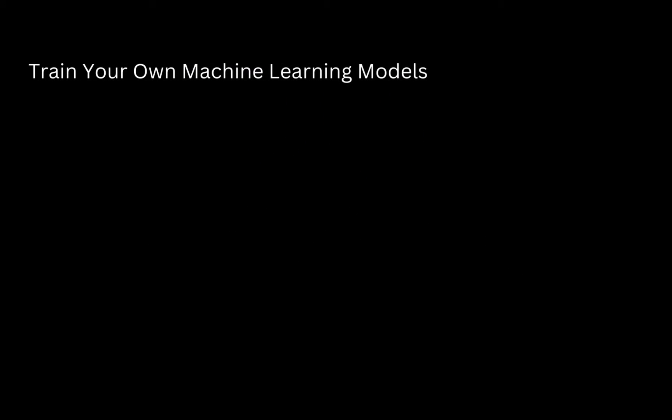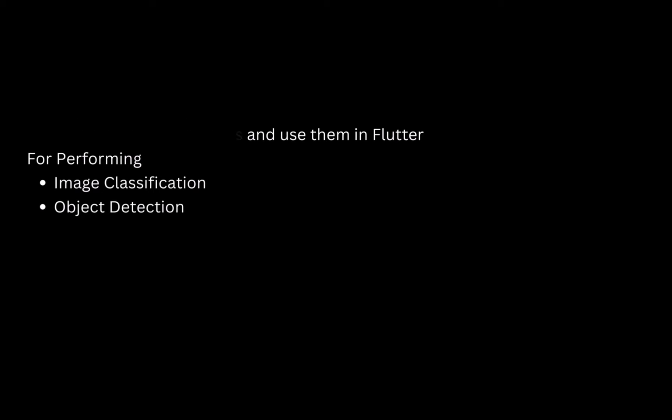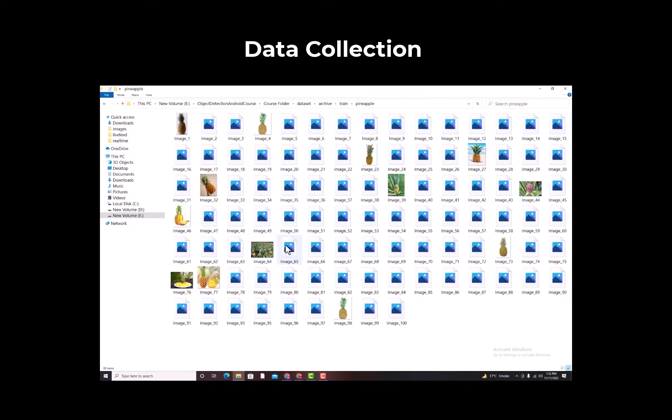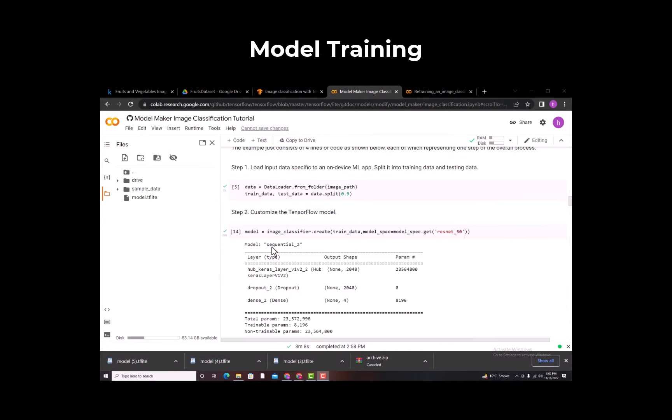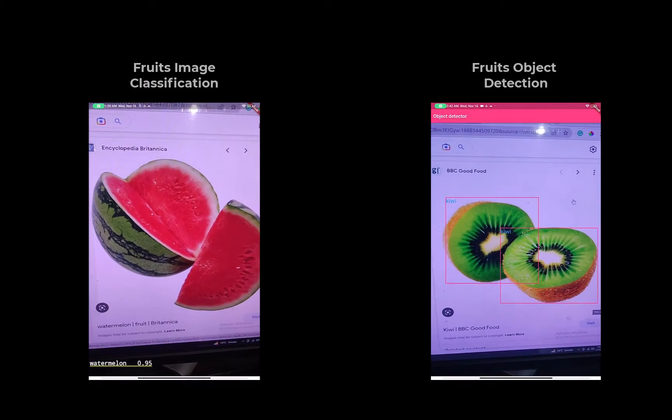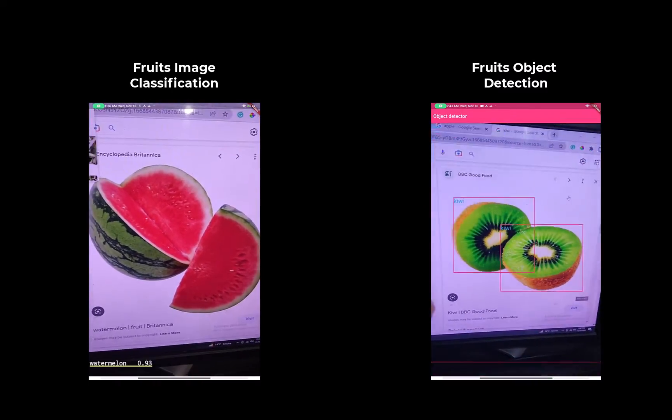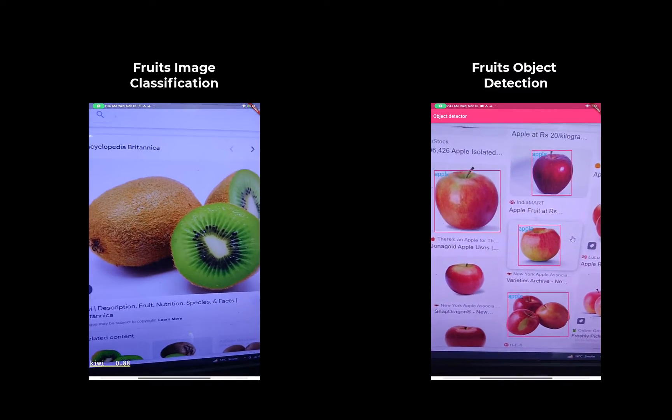The third section of this course is about training your own machine learning models. In this section, you will learn to train machine learning models and use them inside Flutter for performing image classification and object detection. First, you will learn to collect and arrange the datasets for model training. After that, you will learn to train machine learning models on those datasets. And finally, you will learn to use those trained models inside your Flutter applications with both images and live camera footage.